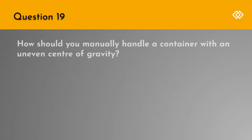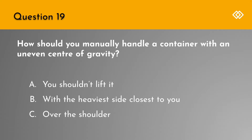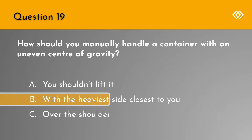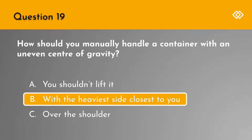Question 19. How should you manually handle a container with an uneven centre of gravity? A. You shouldn't lift it. B. With the heaviest side closest to you. Or C. Over the shoulder. The correct answer is B. With the heaviest side closest to you.